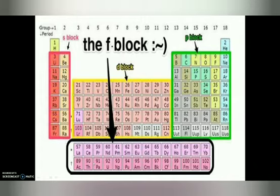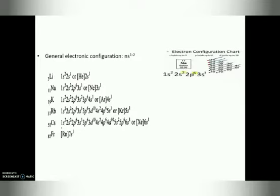What is the basis of arranging elements in the block? How can we say that these elements belong to S block? If the last electron enters the S subshell, it will be in the S block. For example, all alkali metals — the first group elements — have their last electron entering the S subshell. If the last electron enters the P subshell, they are P block elements; similarly for D and F blocks.